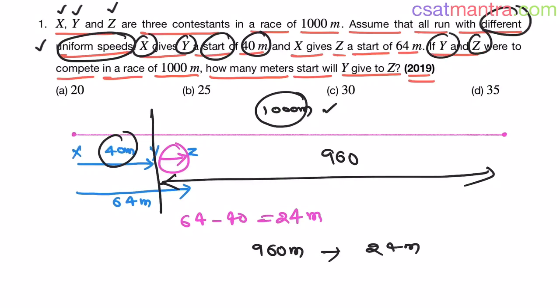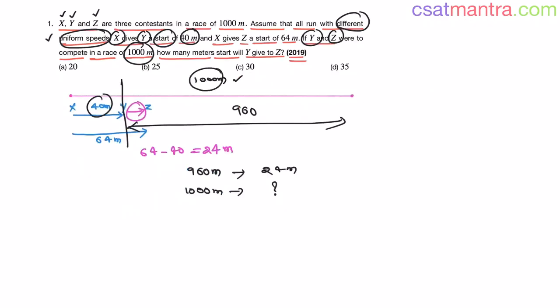If Y and Z were to compete in a race of 1000 meters, for 1000 meter race how much start Y should give to Z? The value will be in proportions. Let's call it S. So 960 by 1000 equals 24 by S. Otherwise you can directly write S as 1000 into 24 by 960. From here also you get the same thing.